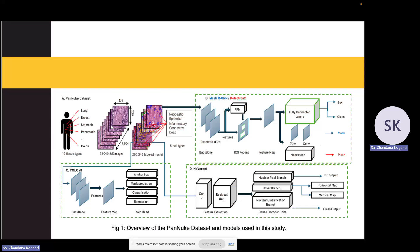This is the overview of the PanNuke dataset and models used in this study. PanNuke has 19 tissue types and 5 cell types, and it was evaluated with Mask R-CNN, Detectron2, YOLOv8, and HoverNet.